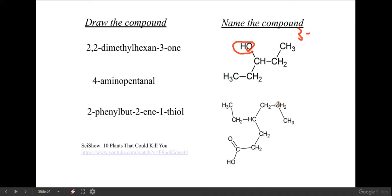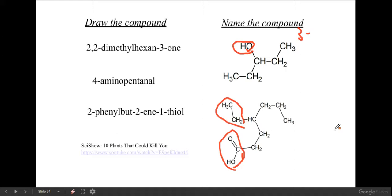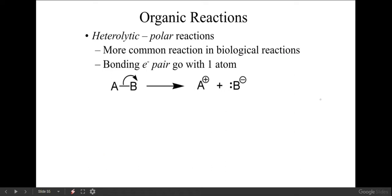Here we have one two three four five six seven - so seven is 'hepta.' Counting here - one two three four - it is going to be 4-ethyl because this is an ethyl group. And instead of heptane, it's going to be heptanoic acid, indicating a carboxylic acid. You could write '1-heptanoic acid' but normally if it's at position one you leave the one off, since it's assumed to be at the end because it has to be at the end.